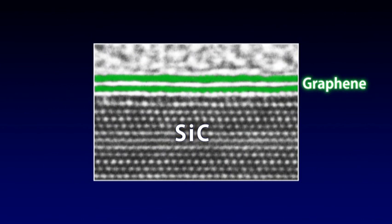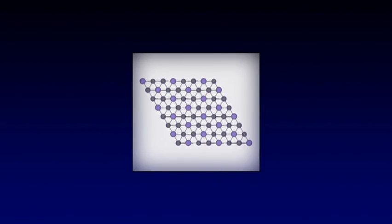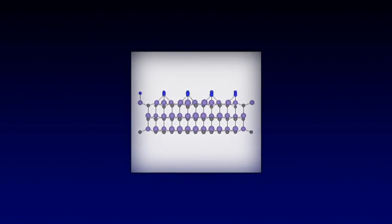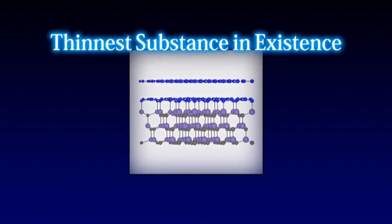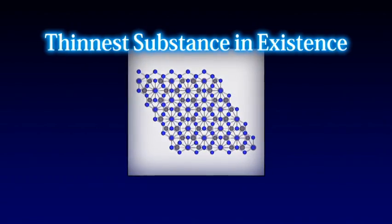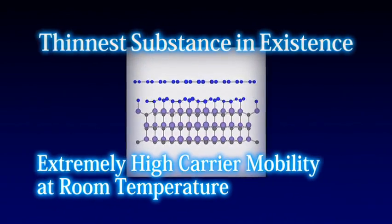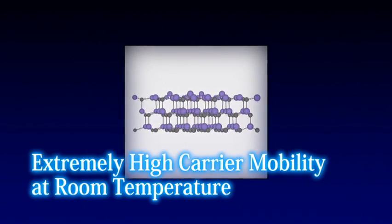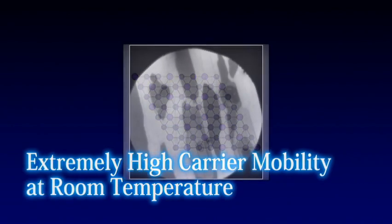Graphene is a single sheet of carbon atoms having a honeycomb structure. Graphene is only one carbon atom thick and is the thinnest substance known. It boasts extremely high carrier mobility at room temperature. Because of this, it is receiving much attention as a next-generation material for electronics.